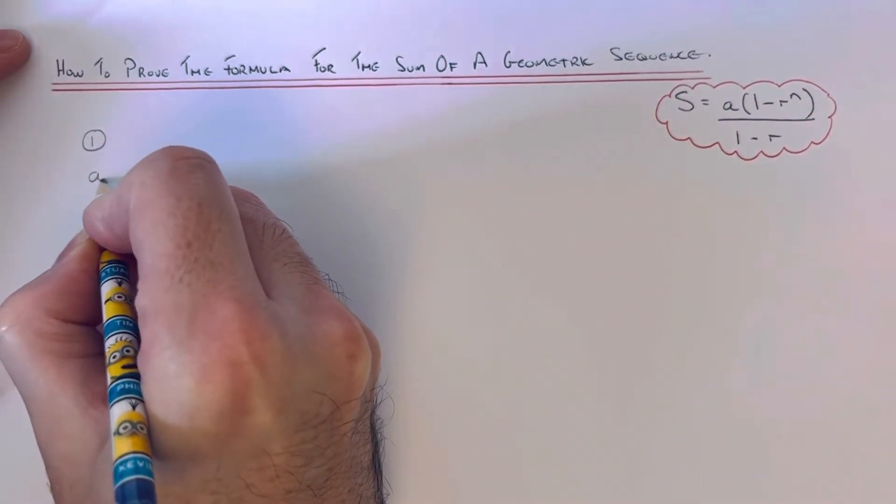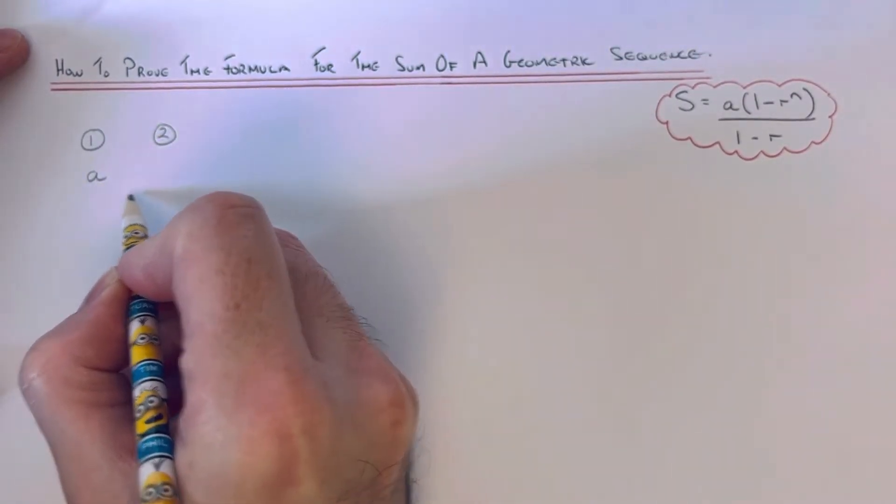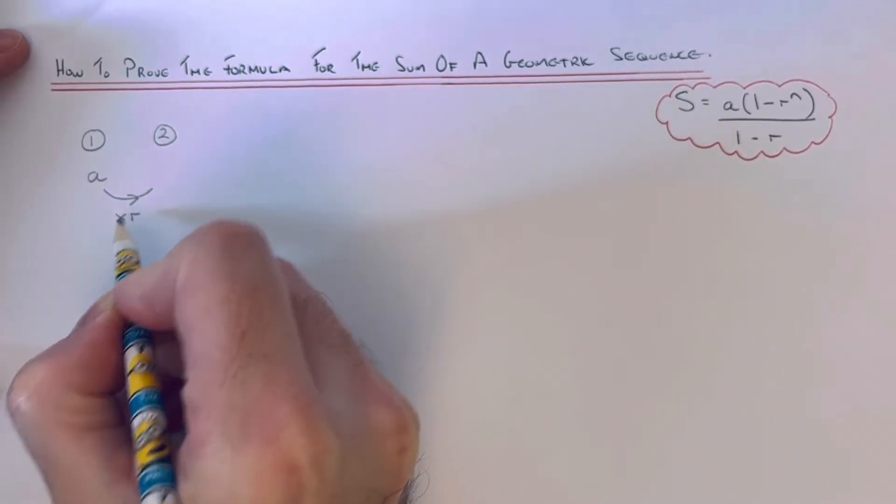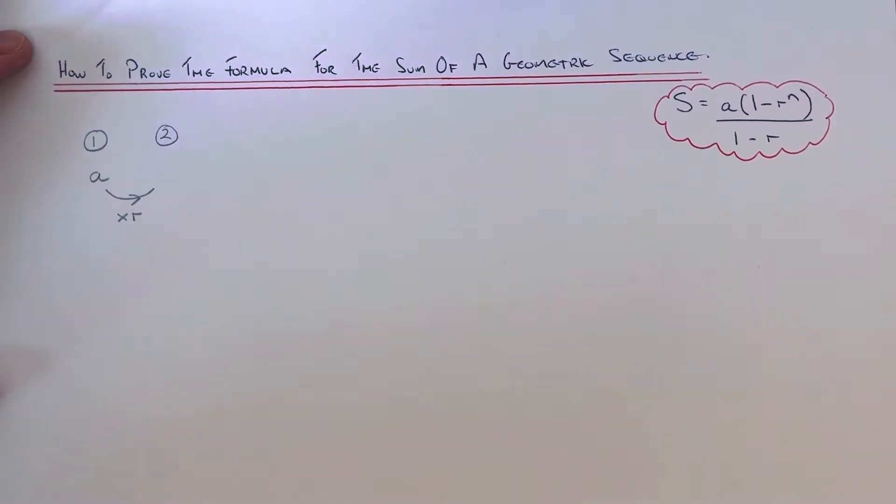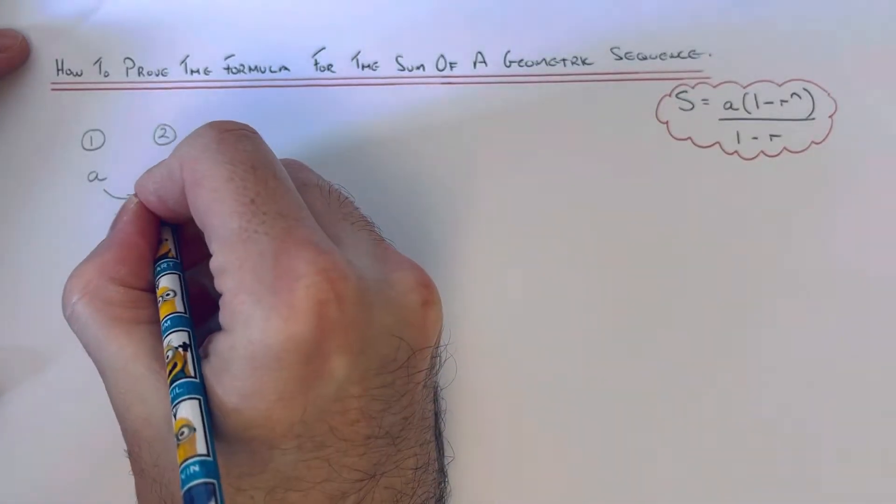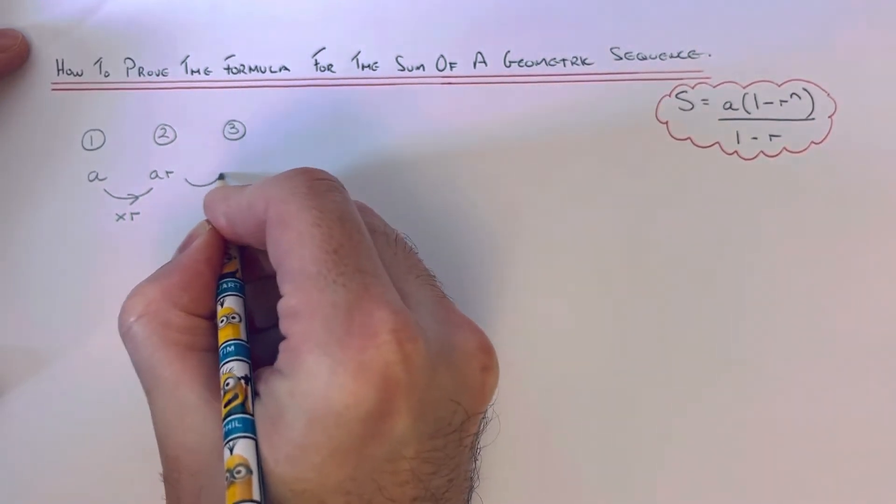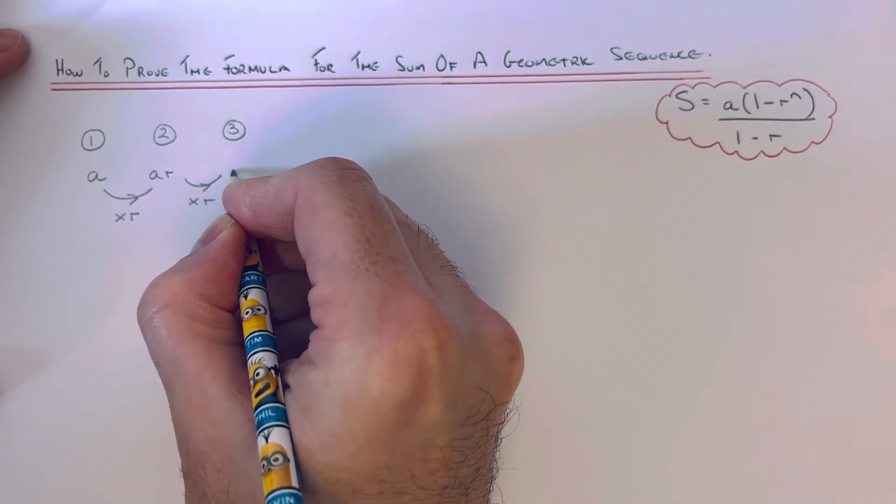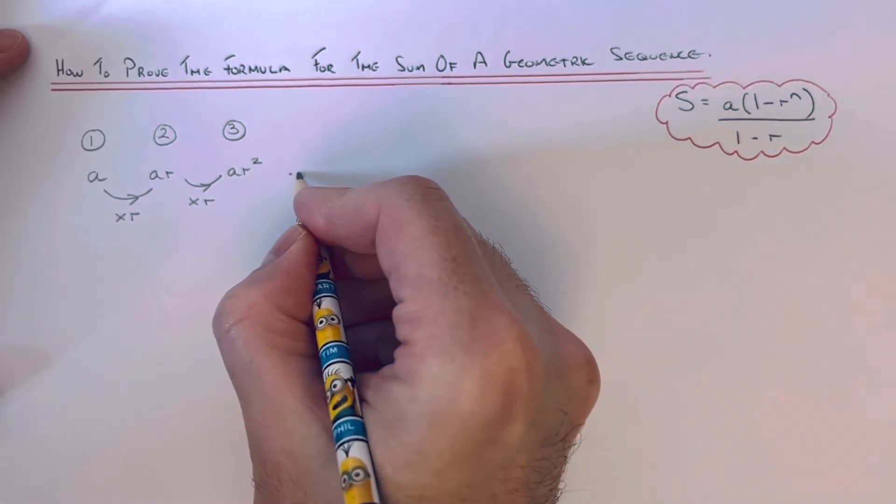first term of our sequence is a. Our second term of our sequence can be found by multiplying the first term by a number which is called the common ratio, so our second term will be ar. Our third term can be found by again multiplying it by r again, so we'll get ar squared.